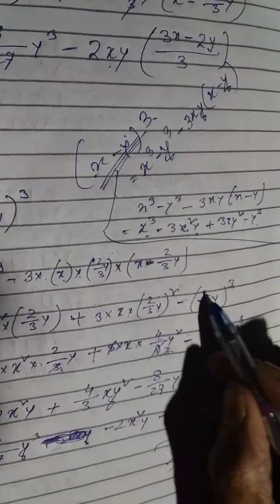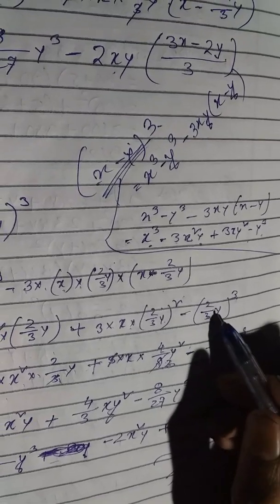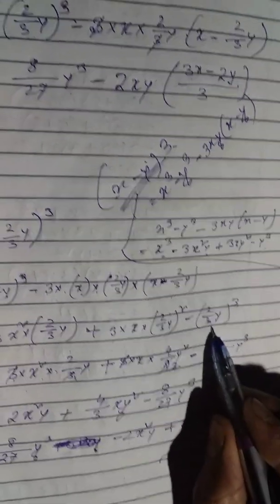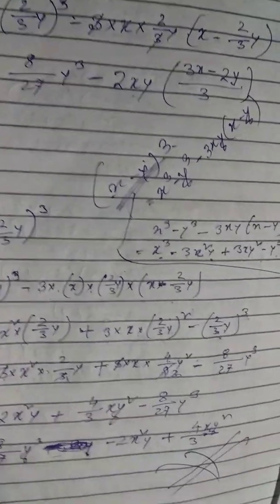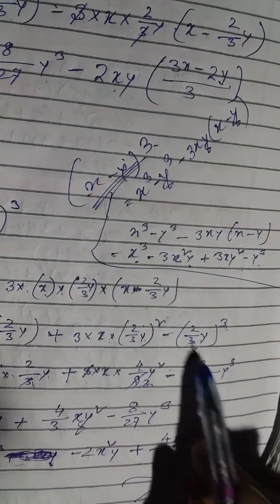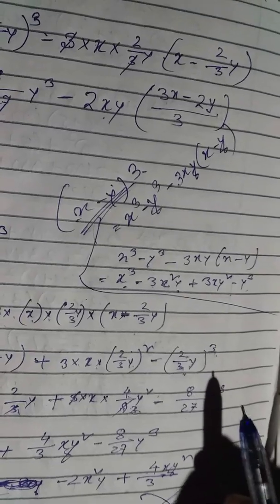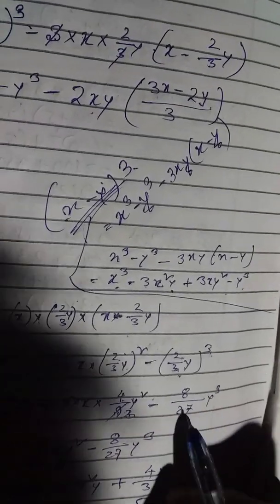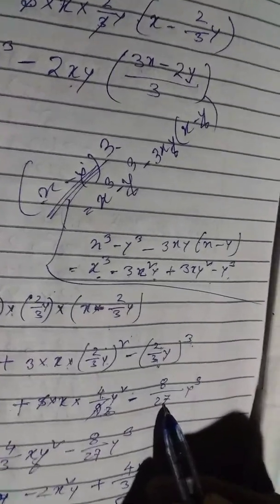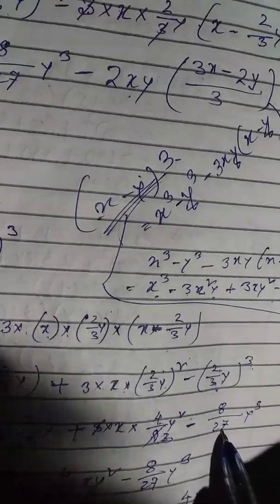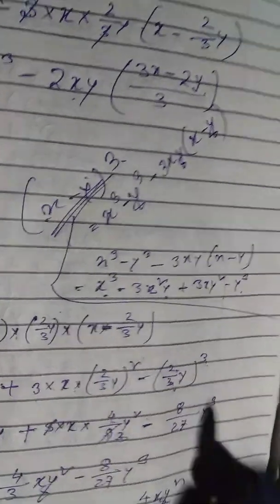Minus 2 by 3 Y divided by 3 whole cube. This is 3 whole square, 2 whole square is 8. So, divided by 3, 3 whole square is 2 Y cube. Next step.